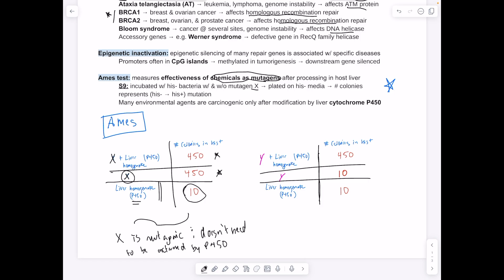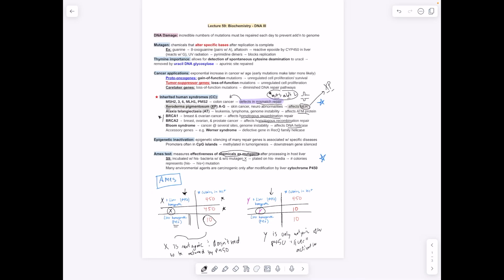Here we have a different scenario. The premise is that a lot of the times, chemicals will become mutagenic after they go through the liver and are exposed to P450. Here, we have a different scenario where we see that this chemical Y is not mutagenic. Y is only mutagenic after P450 liver activation. The Ames test basically allows us to determine whether or not a chemical is mutagenic or not.